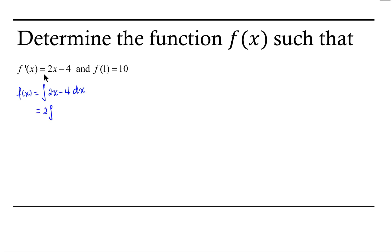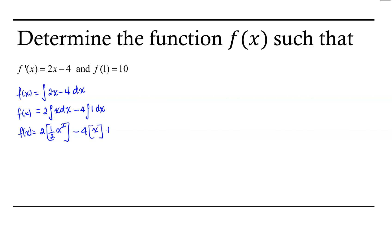So that's 2 times the antiderivative of x dx. The exponent of x is 1, so the new exponent will be 1 plus 1, or 2. So x squared, and then we multiply by the reciprocal of that exponent, so 1 half. Minus 4 times the antiderivative of 1 dx, which is x. And then we have our constant of integration plus c. Notice that the 2 and the 1 half will simplify, and that just becomes a 1. So our function is f of x equals x squared minus 4x plus c.